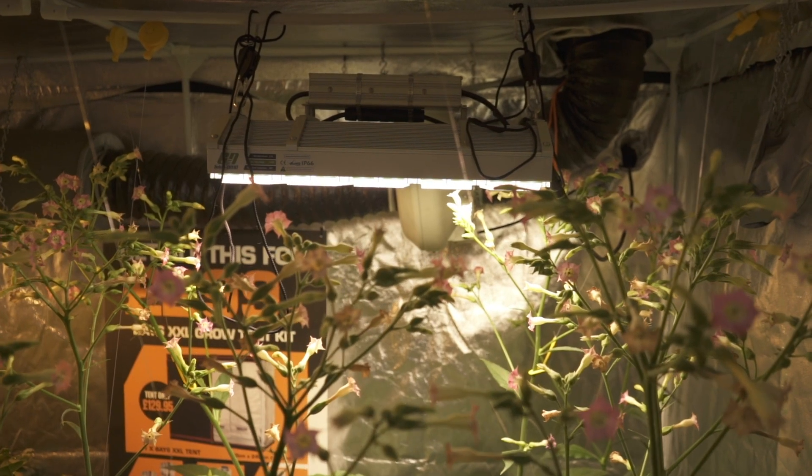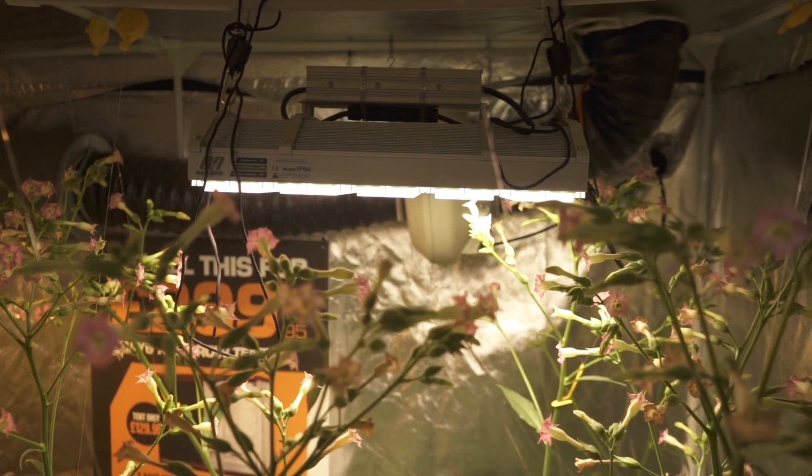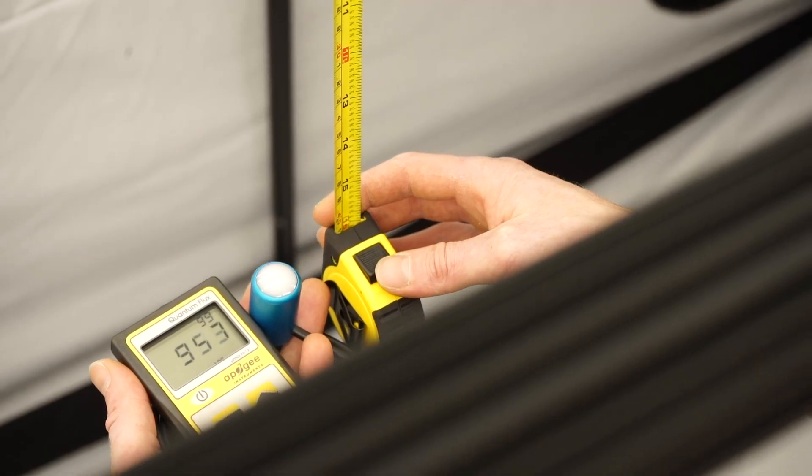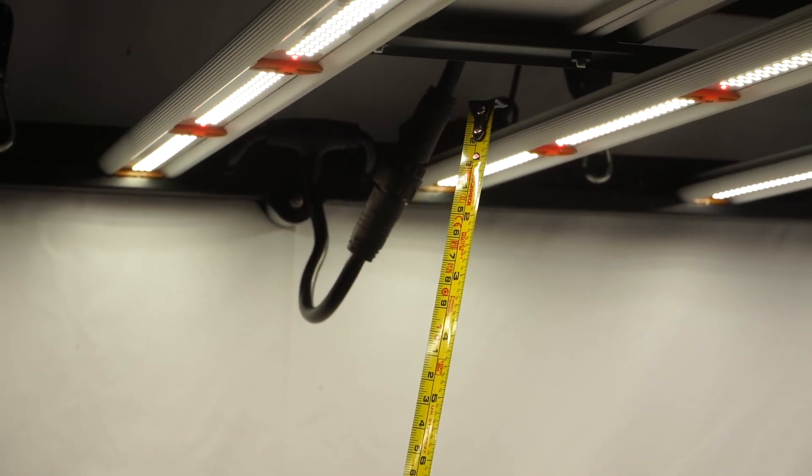For this reason, at different stages of a crop, it's very important to find the right height for your light and the correct dimmer setting. So we've put together this guide to help you hang your light at the optimal distance and wattage.